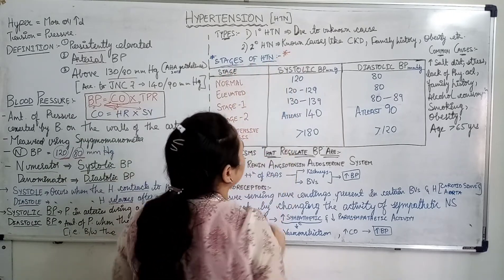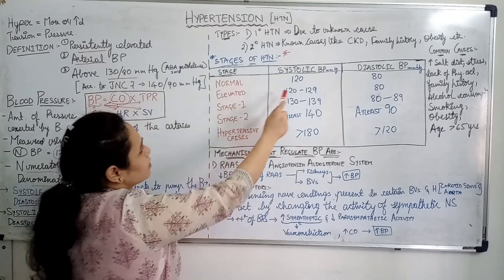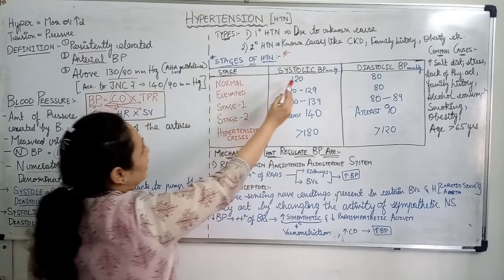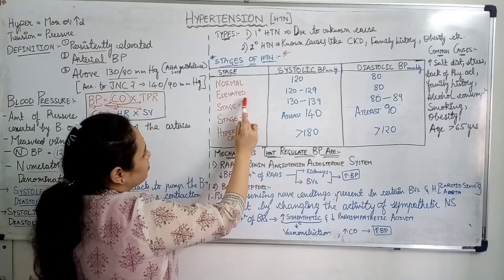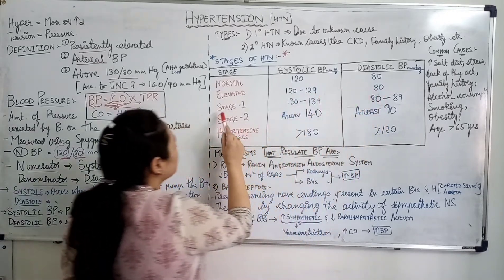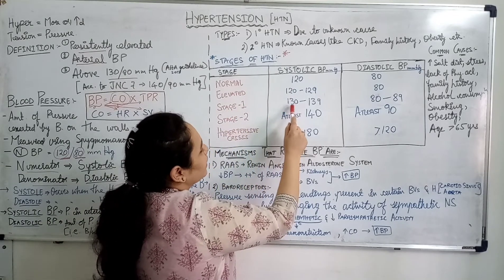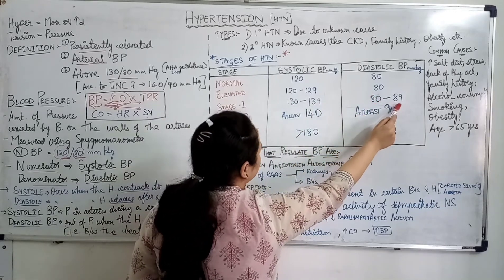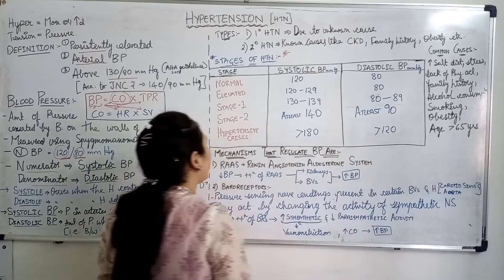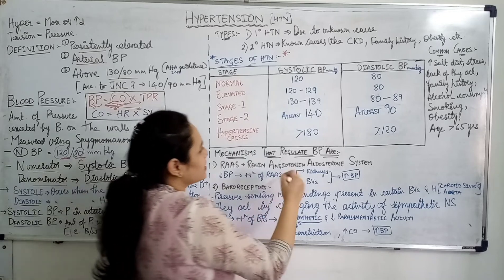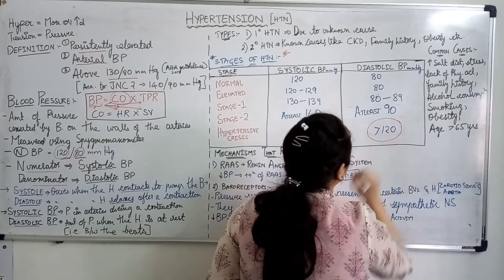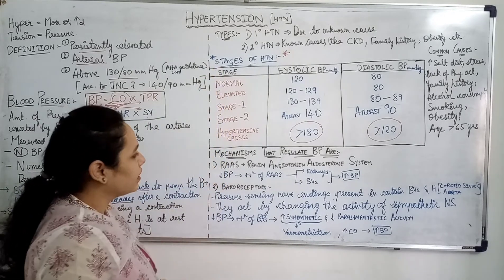Normal blood pressure is 120 by 80 mmHg. In elevated blood pressure, systolic is between 120 and 129 and diastolic is below 80. In stage 1 hypertension, blood pressure is between 130–139 systolic and 80–89 diastolic. In stage 2 hypertension, systolic is at least 140 and diastolic is at least 90. There is also a scenario called hypertensive crisis, in which systolic blood pressure is above 180 and diastolic blood pressure is above 120.